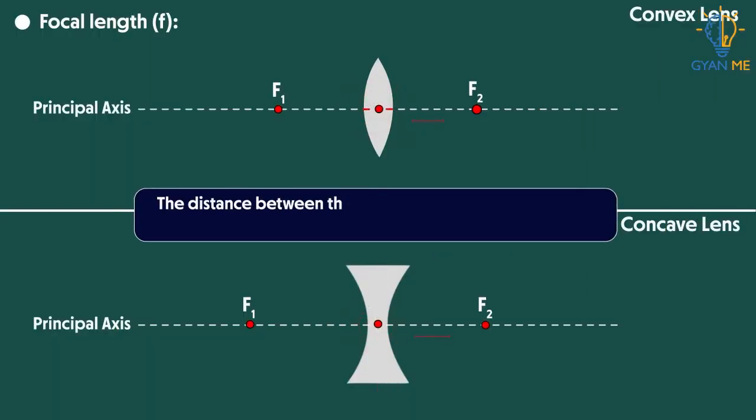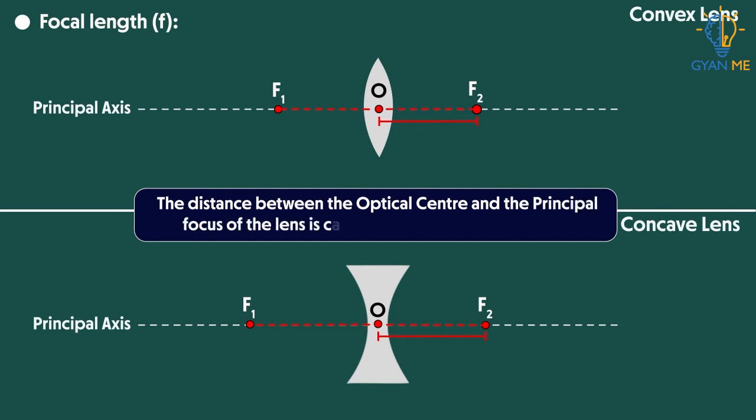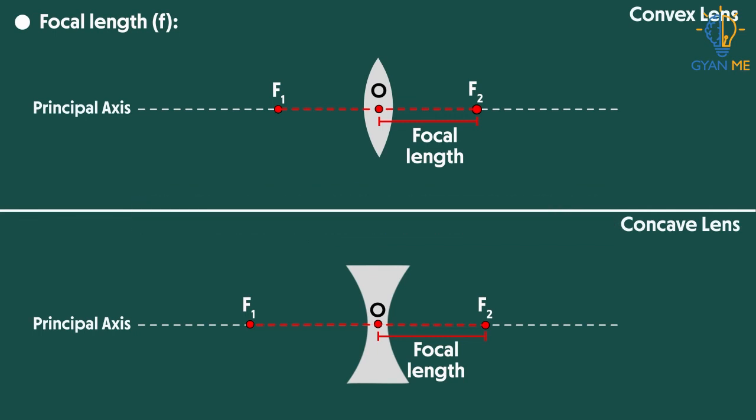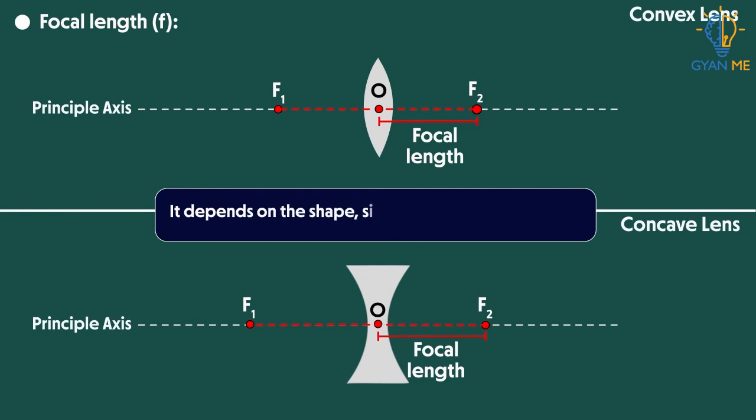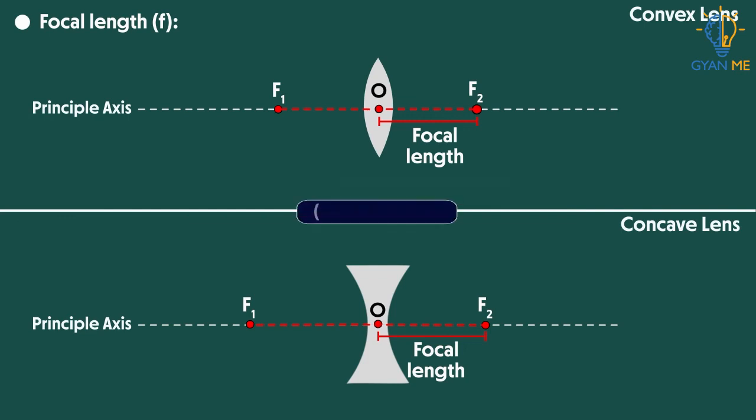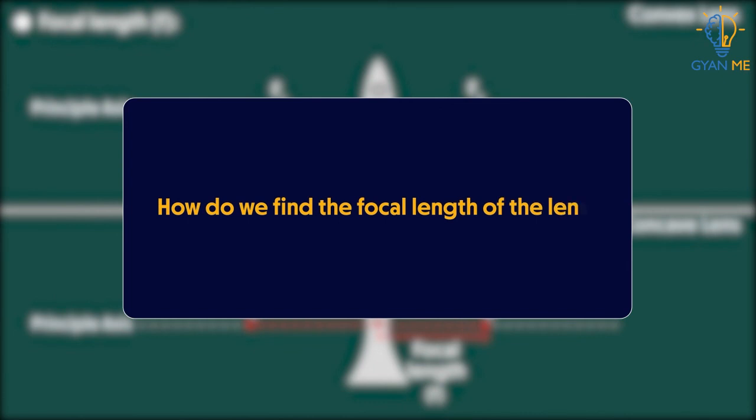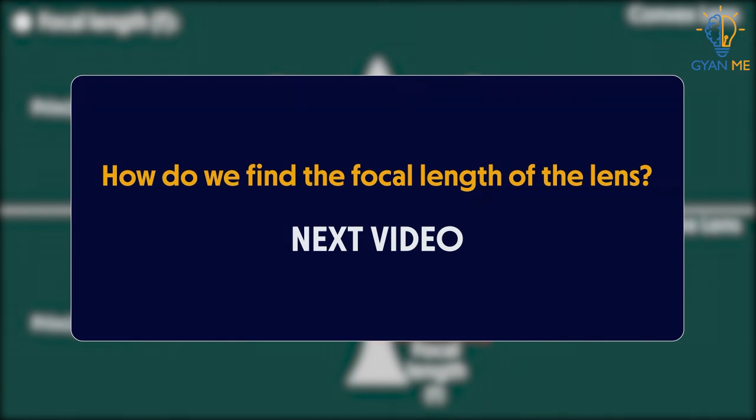Now the distance between the optical center and the principal focus of the lens is called the focal length of the lens. Note that for different lenses, this distance will be different. That means it depends on shape, size and curvature of the lens. The letter f, that is small f, is used to represent the focal length. Now the question is, how do we find the focal length? We will see that in our next video. See you!